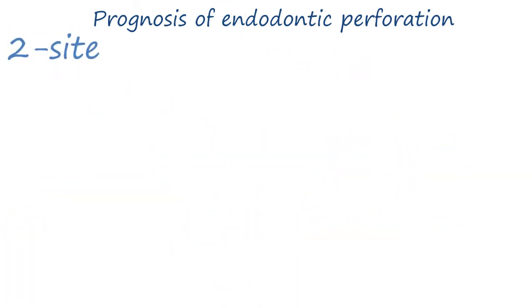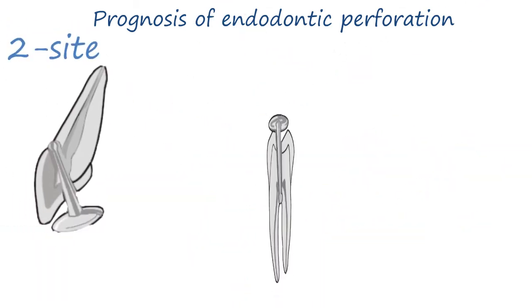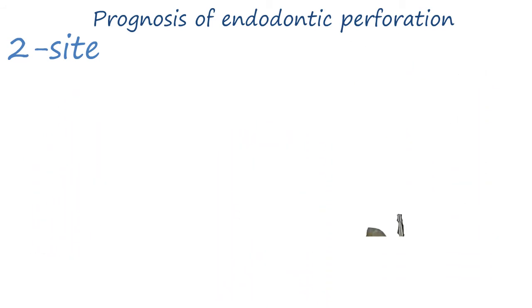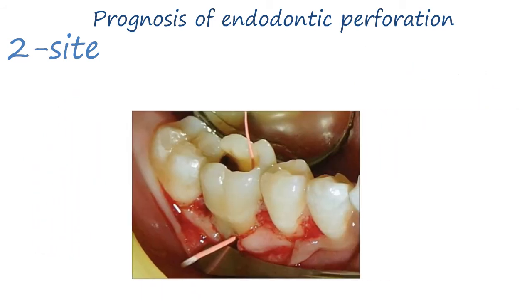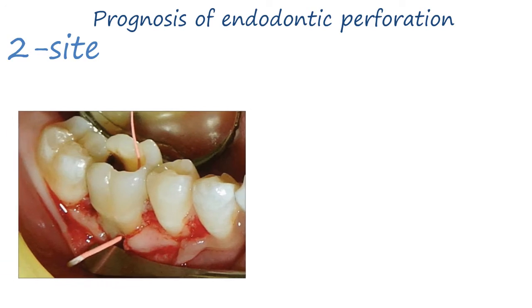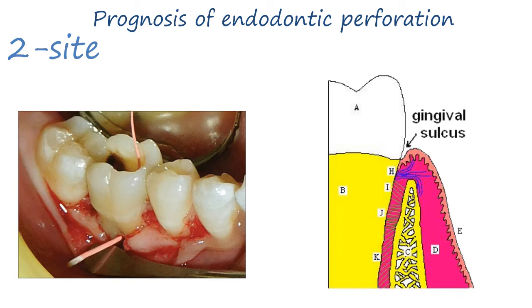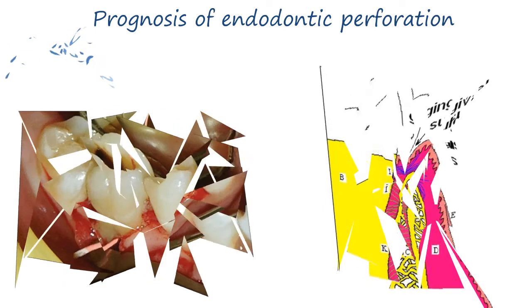Regarding site, we have coronal, cervical, or apical perforation. The worst scenario is a cervical perforation at the crestal area — the critical zone — as it is related to the gingival sulcus, creating communication between the perforation area and oral fluids and bacteria. Bacterial entry and infiltration to the perforation site could be quick. The crestal zone might be more apical in cases of recession. Apical perforation has a better prognosis.